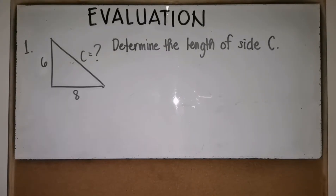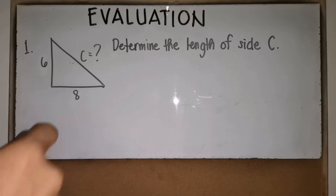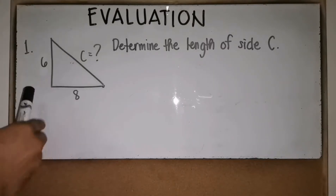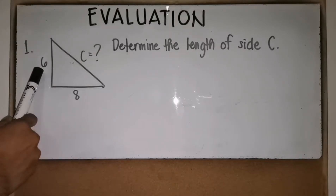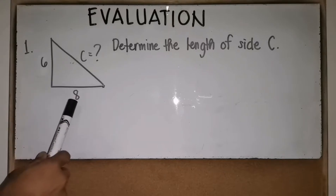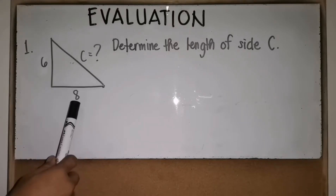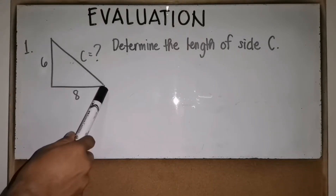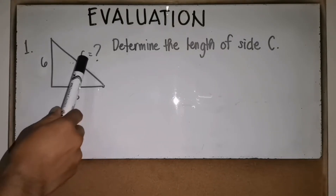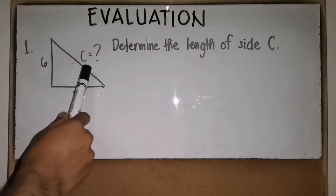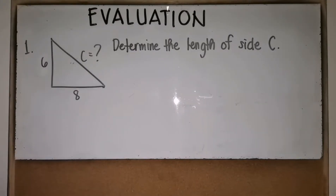In this video I'll be showing you how to solve the evaluation part of your MAT 10 module. Number one: determine the length of side c. This figure has one side measuring six units, another measuring eight units, and side c is still unknown. We will apply the Pythagorean theorem to solve for it.